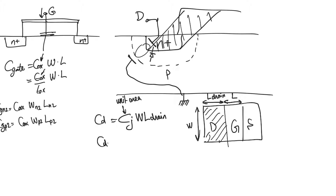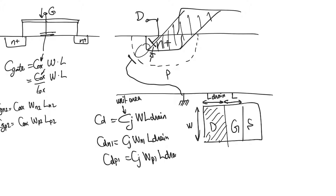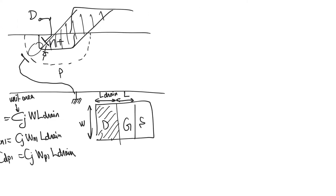So C_DN1 = C_j * W_N1 * L_drain, and C_DP1 = C_j * W_P1 * L_drain. L_drain is not necessarily constant between transistors, but it usually is. We will learn more when we look at layouts in module 8.